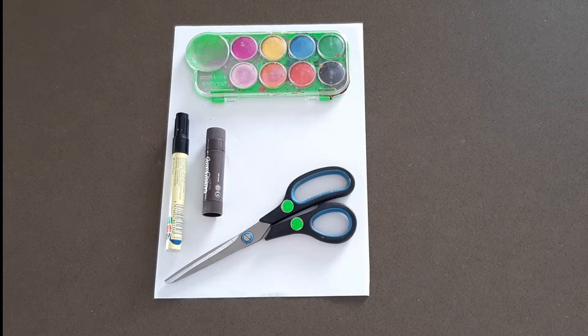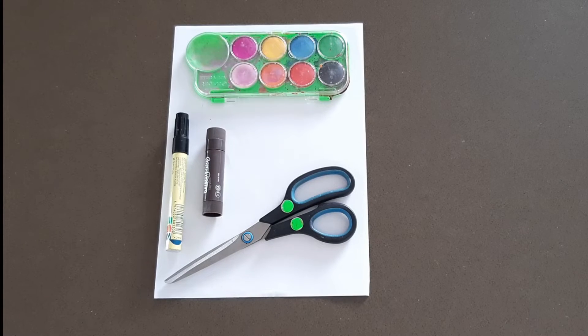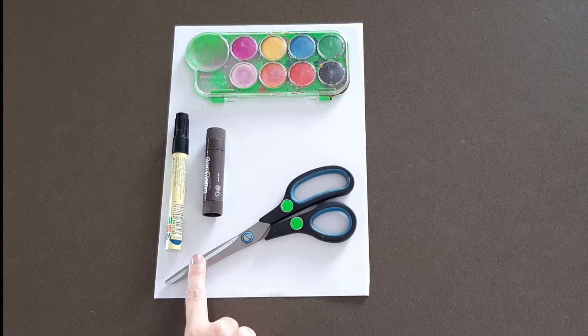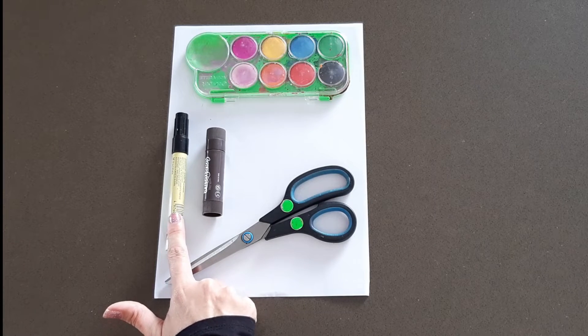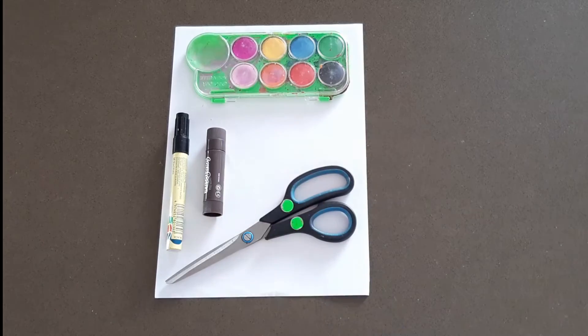To make your origami dog you will need some paper, a pair of scissors, a black marker and some paint or crayons.